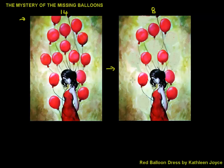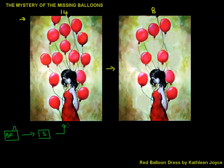Let's go back to basics and think about how balloons are produced. There's a balloon factory — BF — which produces balloons, some of which go into storage. Then the balloons are delivered to the lady who sells them. Let's say every week 10 balloons are delivered and she sells 10 balloons, meaning the total number remains at 14.